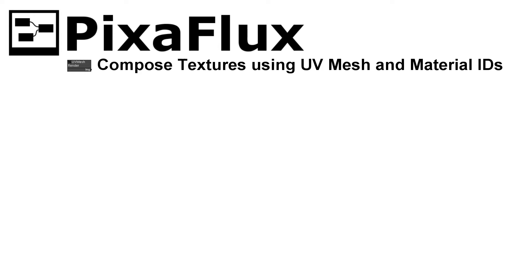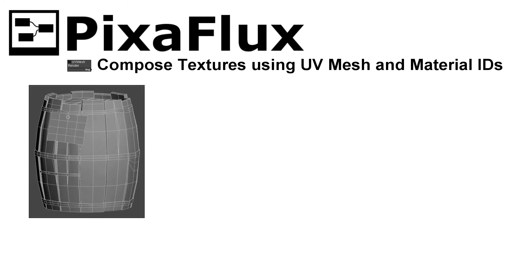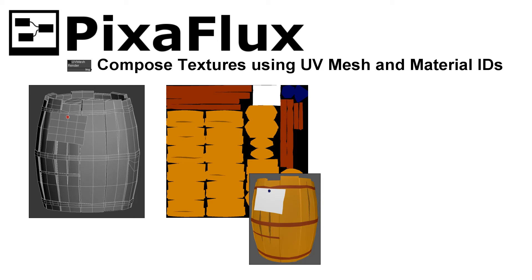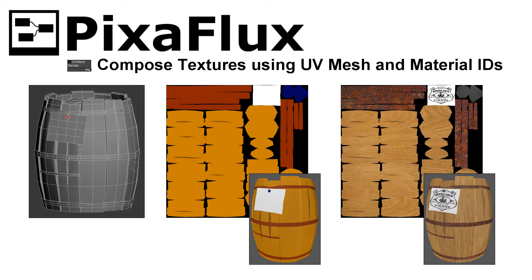Hello, in this Pixaflux video tutorial you will learn how to use the model's UV mesh and material IDs to compose the scene textures. For this tutorial we will compose the textures for this old barrel. The barrel model has three material IDs, and the label and the nail are two different models. We will use the UV mesh render node to render the material IDs. We will start with a simple texture composed of constant colors, and we will add photo textures to the project to end up with a more realistic texture.